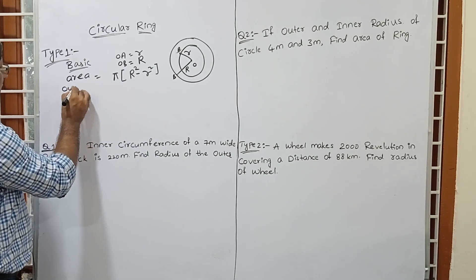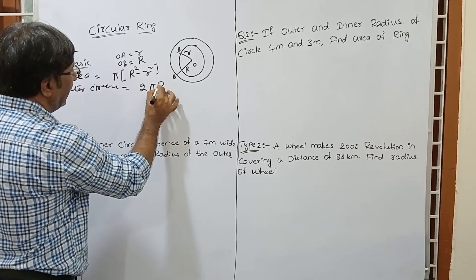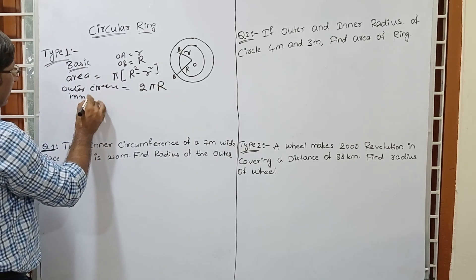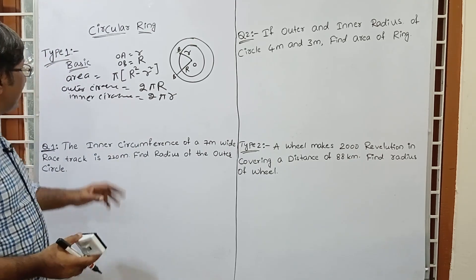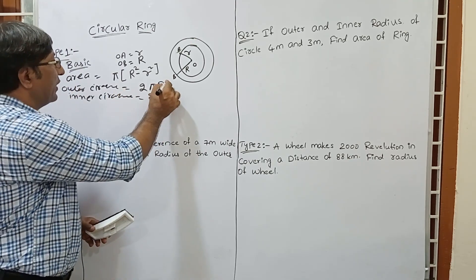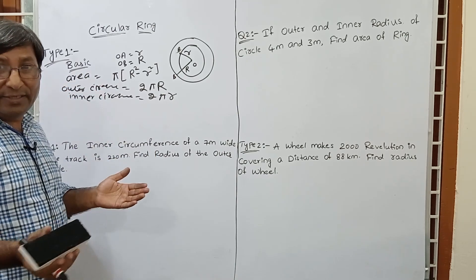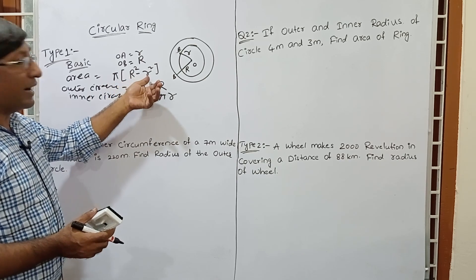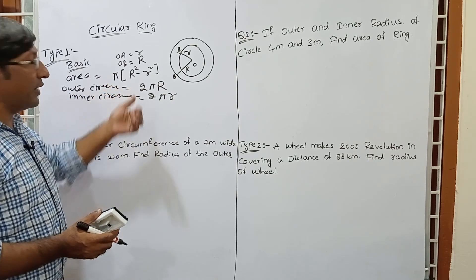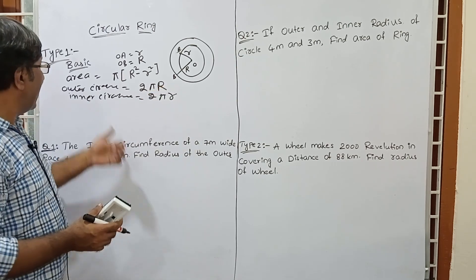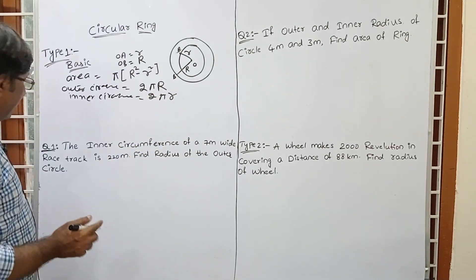The outer circumference is 2 pi R, where R is the outer radius. The inner circumference is 2 pi r, where r is the inner radius. So if we have to find area of ring, apply the formula pi into R square minus r square. For outer circumference use 2 pi R and for inner circumference use 2 pi r.